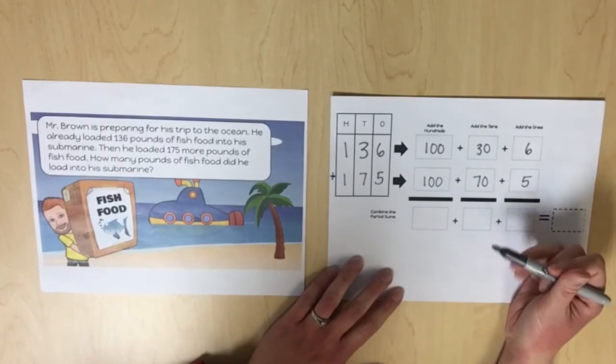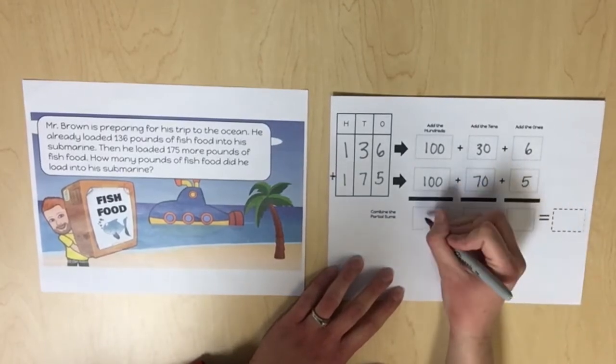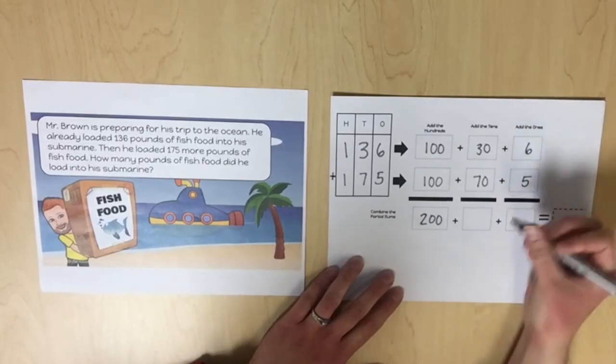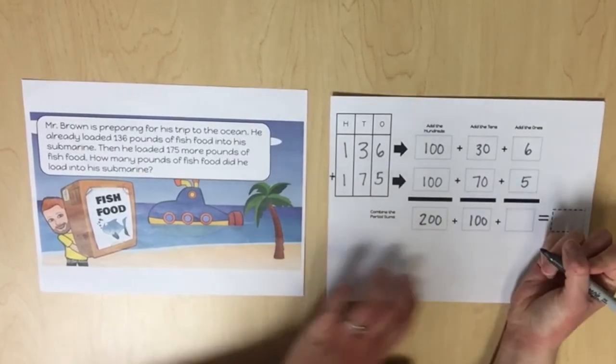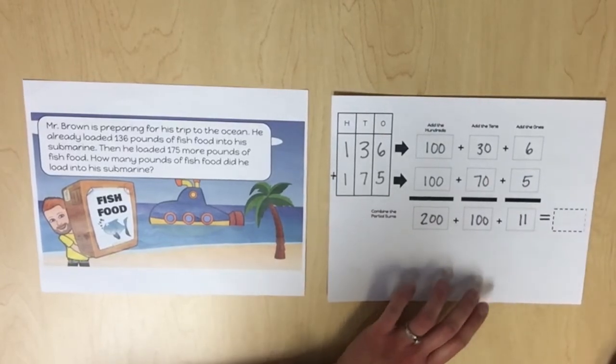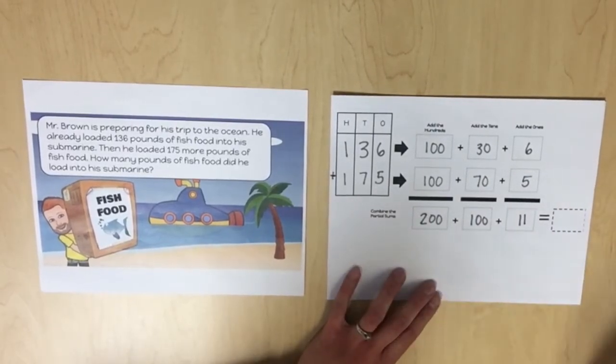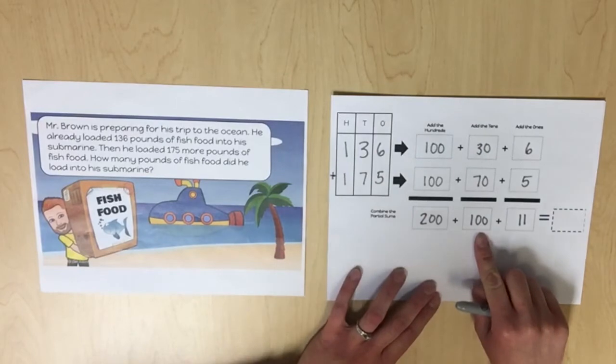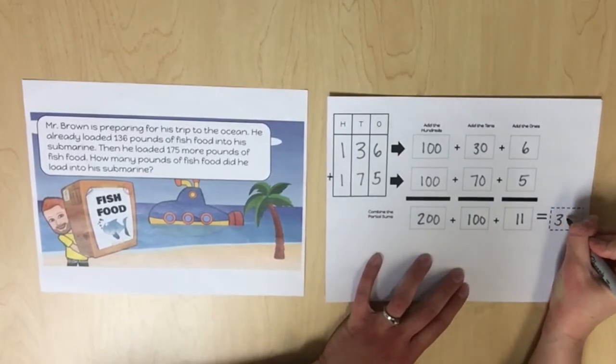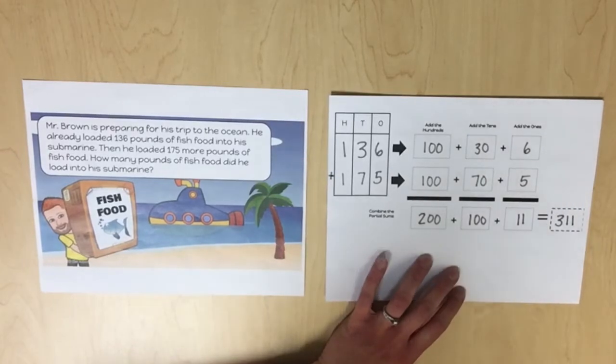When we combine the like values, 100 plus 100 is 200, 30 plus 70 is 100, 6 plus 5 equals 11. Now we're going to combine the partial sums. 200 plus 100 is 300 plus 11 more gives us a sum of 311.